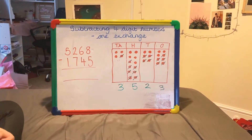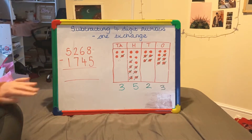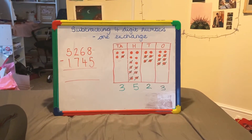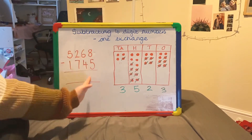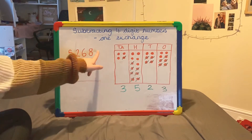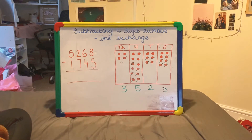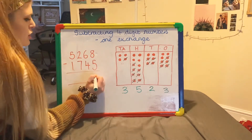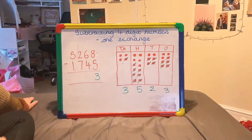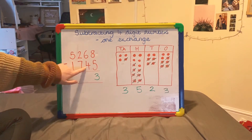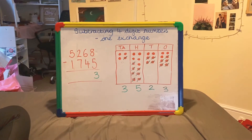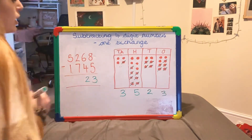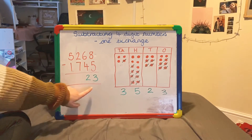Now we've solved it in our place value chart, we can look at how we're going to solve this in the column method. Starting again in the ones column, as always: 8 take away 5 — you can do that on your fingers if you need to — 8 take away 5 is going to be 3. Next we move on to our tens column: 60 take away 40, we know that's going to leave us with 20, so I put a 2 there because that represents my 20.